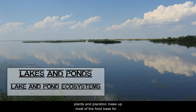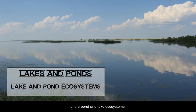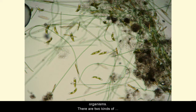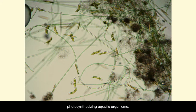Next we'll talk about lake and pond ecosystems. Underwater plants and plankton make up most of the food base for entire pond and lake ecosystems. Plankton are tiny, mostly microscopic, free-floating organisms.